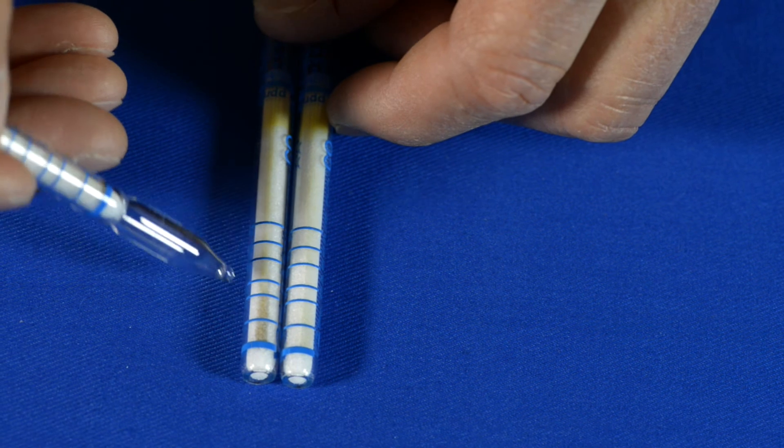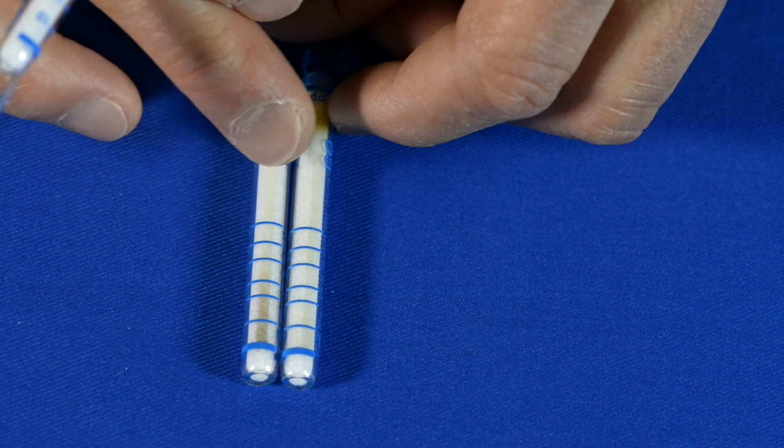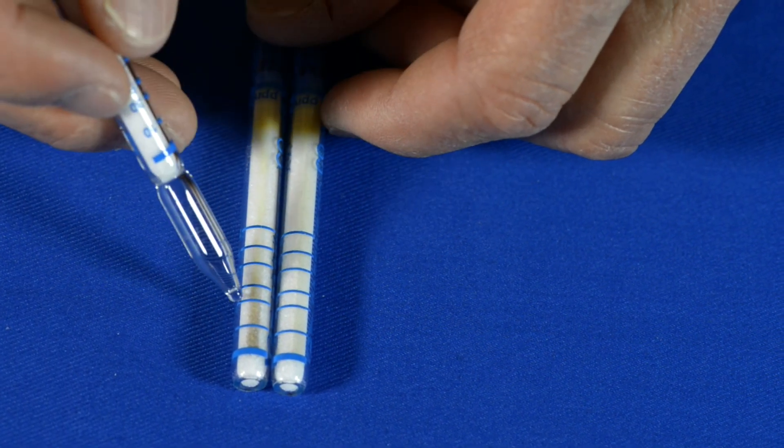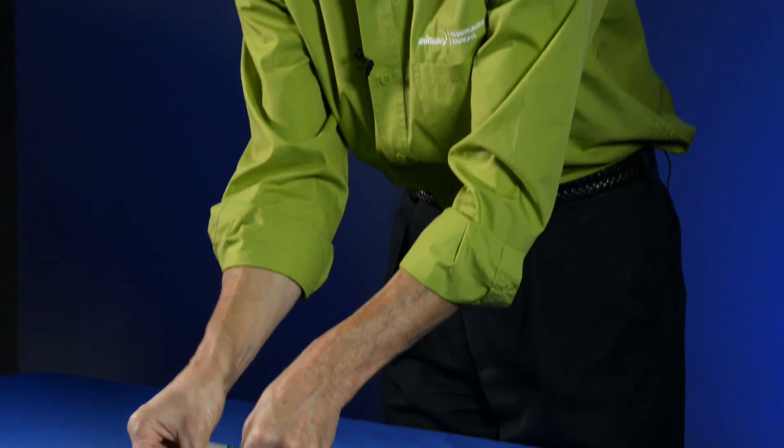It's starting to stain the area between the second and third line. So we're looking at at least 30 parts per million of carbon monoxide showing up on this tube.